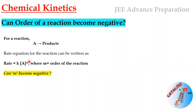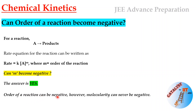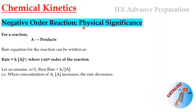The question is: can the order m become negative? The answer is yes — m can be negative, meaning a negative order reaction is possible. Order of a reaction can be negative; however, molecularity can never be negative, because molecularity is the number of molecules participating in a reaction or in the rate-determining step, and the number of molecules can never be negative.